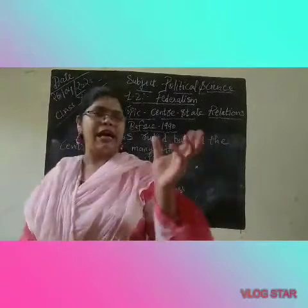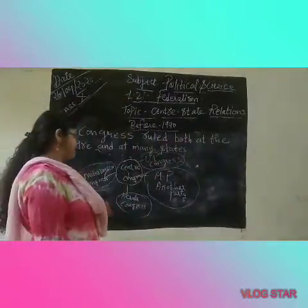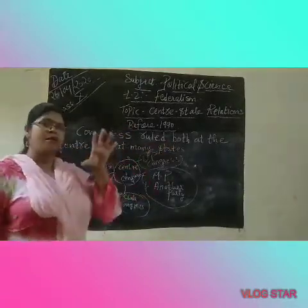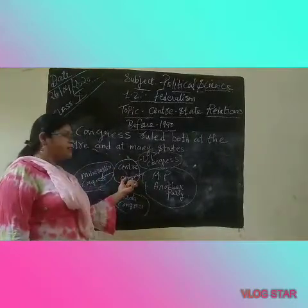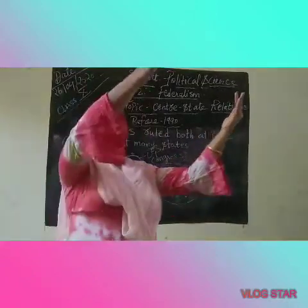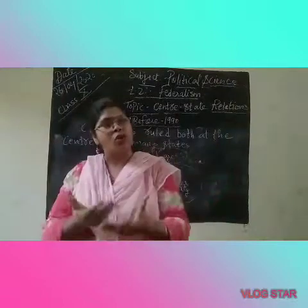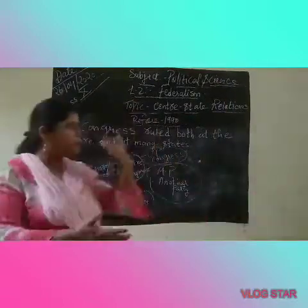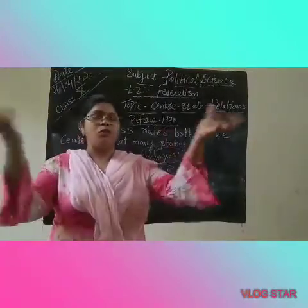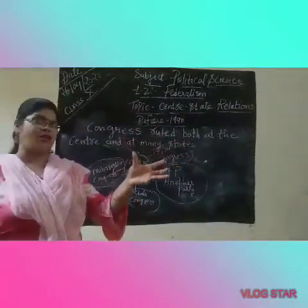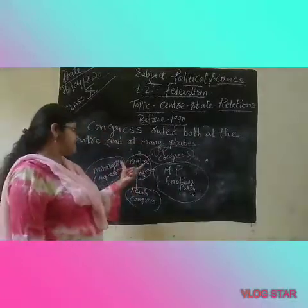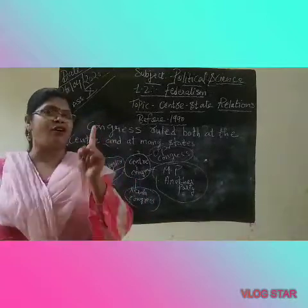Congress ruled both at the center and at many states. So the center is also Congress, and at the state level there are also Congress parties. Because of this, the central government interfered in the work of the state government.